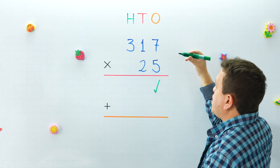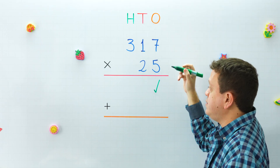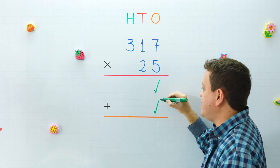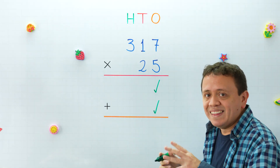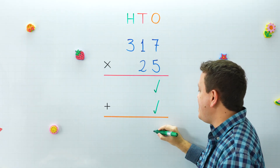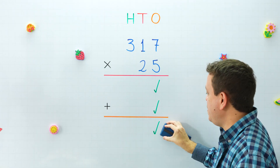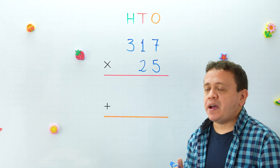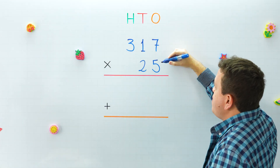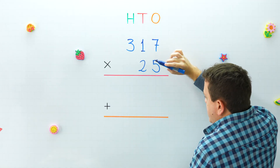In the second step we're going to multiply 317 by two tens. And in the third step we just need to add these two numbers together to get our final answer. That's it — let me erase the board. In the first step we're going to multiply 317 by five ones.